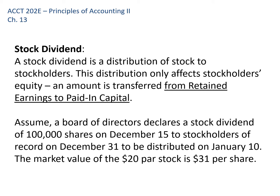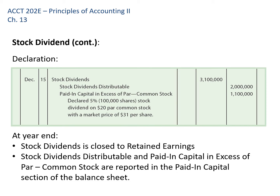In our example: we declare to stockholders of record on December 31st and distribute those shares on January 10th. We need to know the market value of the stock because that's the value being given to shareholders — that's what we record. The par value is $20 and the market value is $31. When the stock dividend is declared, we debit Stock Dividends — a temporary account with a normal debit balance — for the number of shares times market value. We then credit Stock Dividends Distributable for the par value: 100,000 shares times $20.